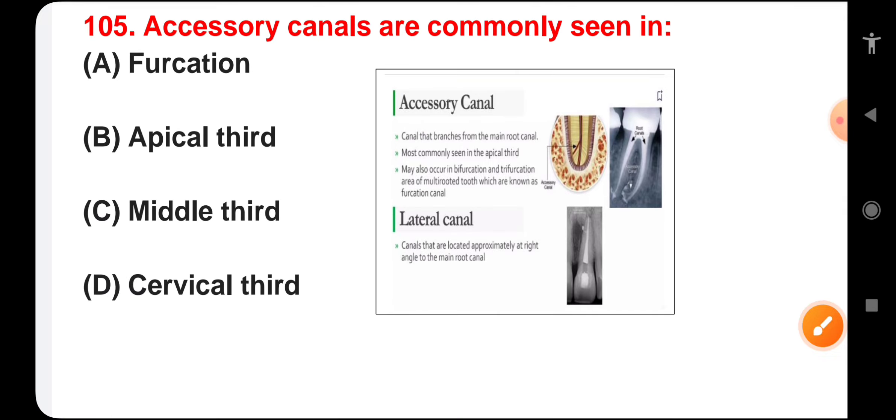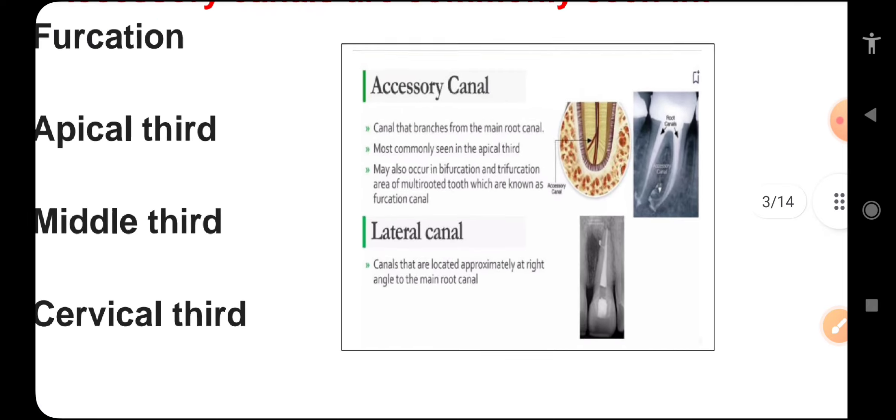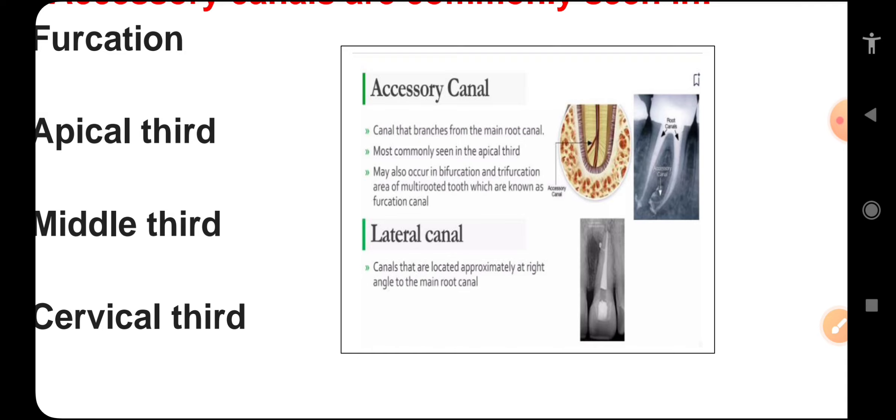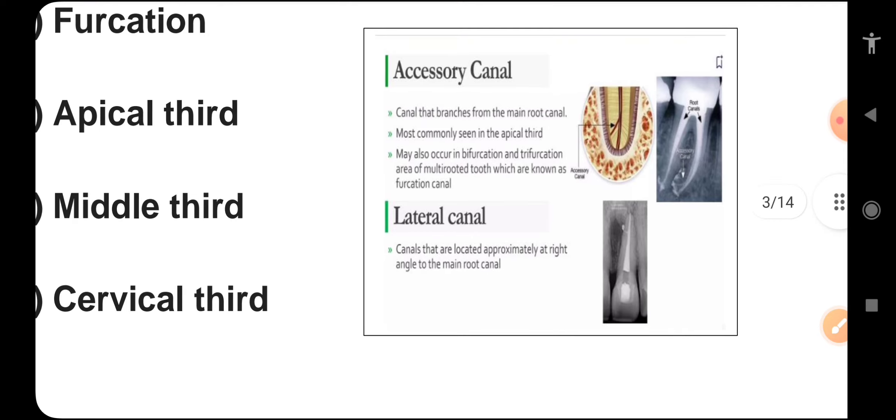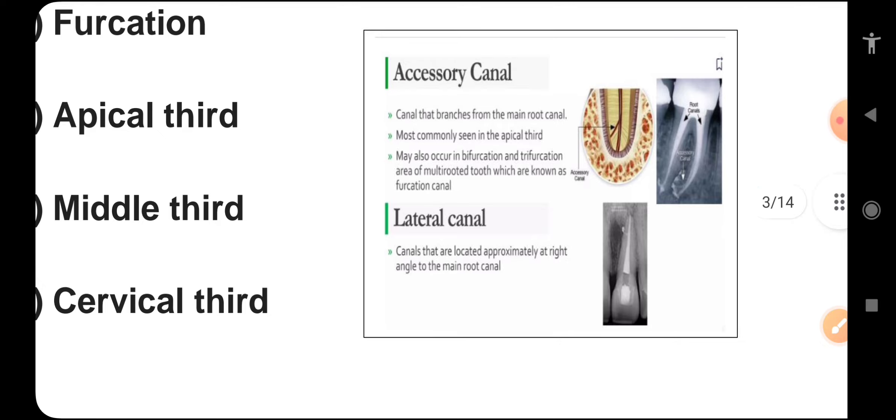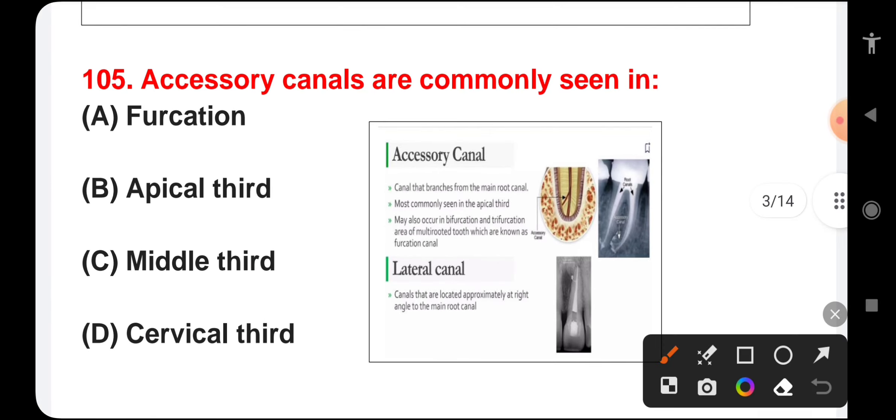Accessory canals are commonly seen in furcation, apical third, middle third, or cervical third. Accessory canals come out from the root canal. They are most commonly seen in the apical third, and also in bifurcation and trifurcation areas. The correct answer is accessory canals are commonly seen in apical third.